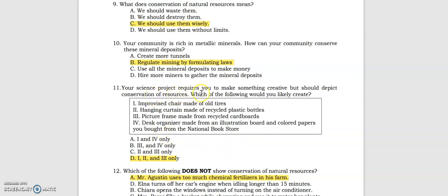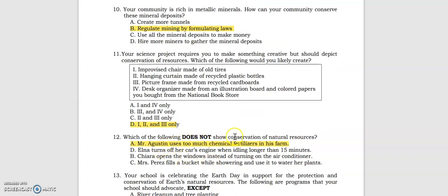Your science project requires you to make something creative but should reflect conservation of resources. Which of the following would you likely create? Improvised chair made of old tires, hanging curtain made of recycled plastic bottles and picture frame made from recycled cardboard. Which of the following does not show conservation of natural resources? Mr. Augustine uses too much chemical fertilizer in his farm. So for us to conserve our natural resources, let's use organic fertilizers, just like the chicken poo.